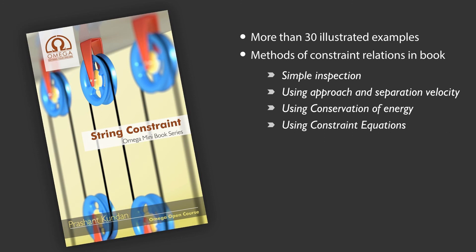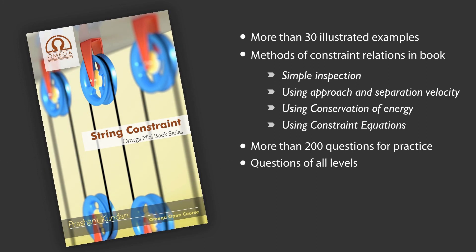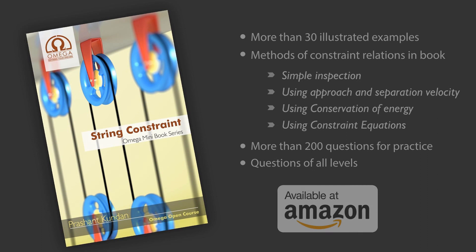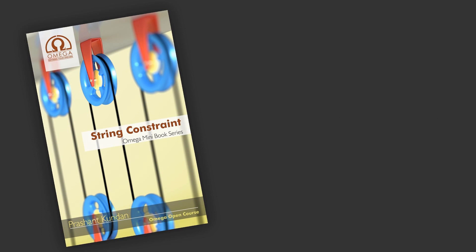The book consists of about 200 questions of string constraint and motion constraint, ranging from very preliminary questions to pretty advanced ones, along with hints and solutions. No matter what stage of preparation you are at, this book is very helpful. You can buy this book from Amazon — the links are given in the description below. Subscribe to the channel and click on the bell icon to get notifications when we upload a new video.